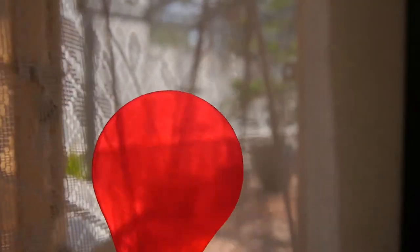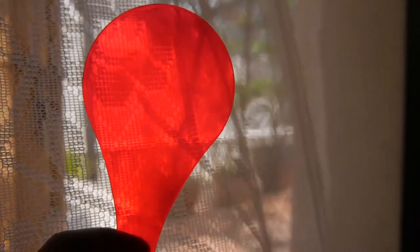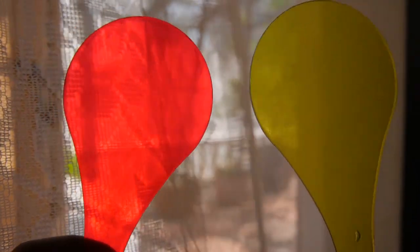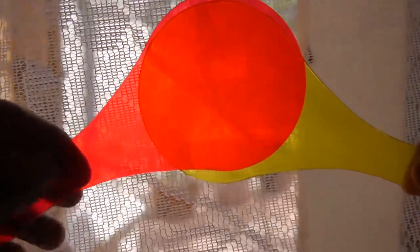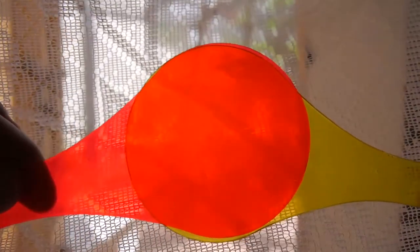For example, here I have a red paddle, now here's a yellow paddle. If I mix these paddles together, I get an orange color. Red plus yellow equals orange. Orange is a secondary color.